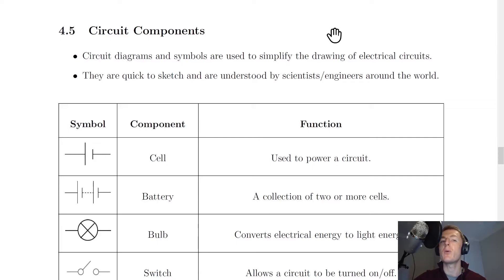The way you'll find circuit components drawn in a diagram is in a circuit diagram with a symbol. Circuit diagrams and symbols are used to simplify the drawing of electrical circuits. The reason we use circuit diagrams with commonly known symbols is that they're quick to sketch and are understood by scientists and engineers around the world.